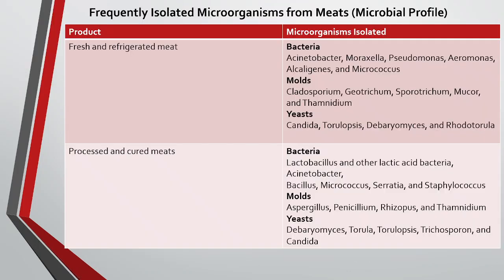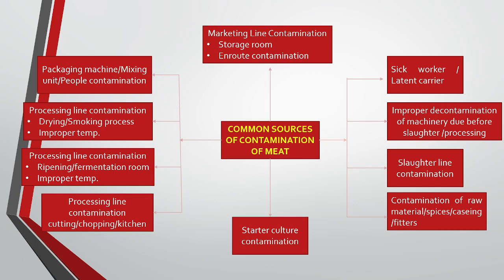Looking at the microbial profile of meat, for fresh and refrigerated meat the microorganisms isolated are bacteria, molds, and yeast. Processed and cured meat also harbor bacteria, molds, and yeast. Common sources of contamination include: sick workers or latent carriers in slaughterhouses, improper decontamination of machinery before slaughter or processing, slaughter line contamination, and contamination from raw materials such as spices, casings, and filters.